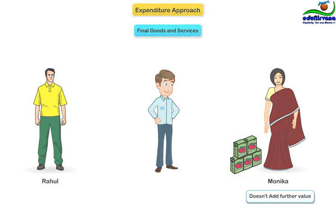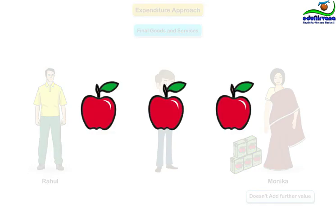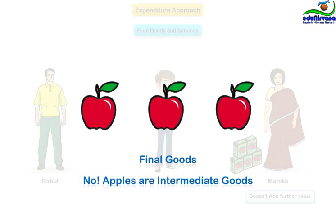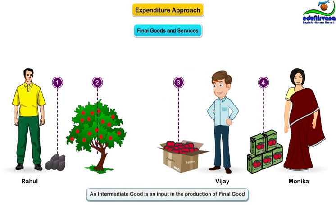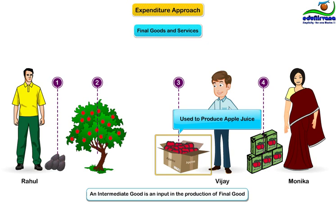Then, what are the apples? Aren't they a final good too? No. In this imaginary economy, the apples are an intermediate good because they were not consumed directly by consumers like Monika. An intermediate good is an input in the production of a final good. In other words, the apples were used to produce apple juice, the final good.